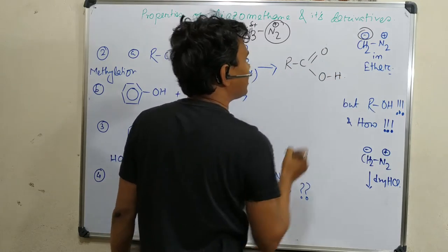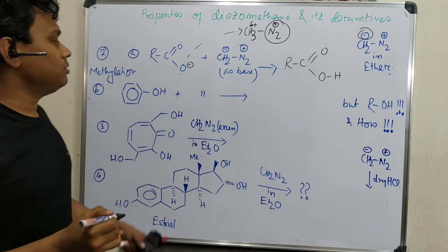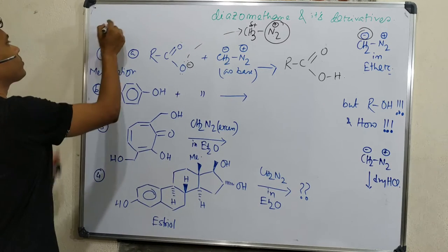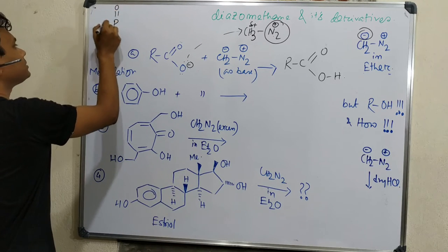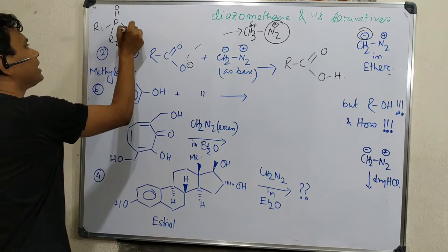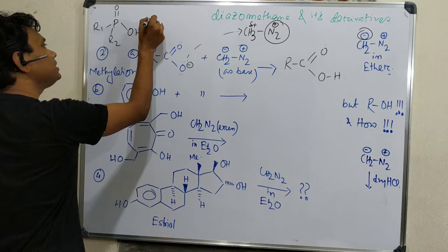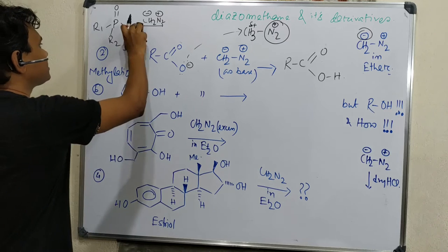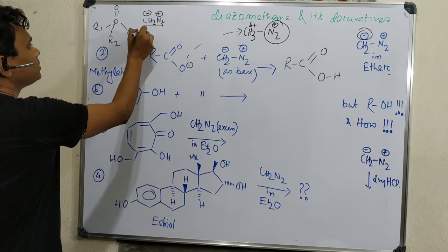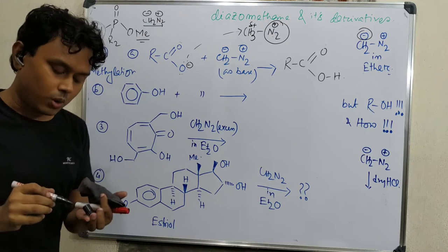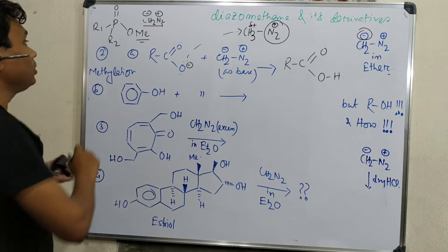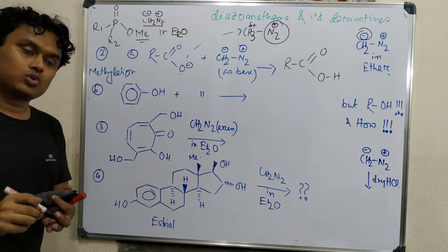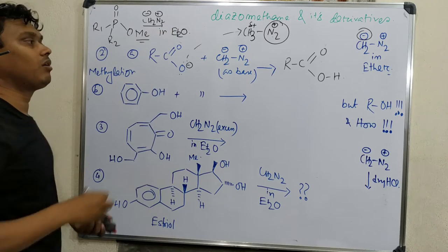Not only carboxylic acid, we can think about phosphonic acids also. If we take R1 and R2 with OH, if diazomethane is provided, then this OH is methylated to produce this methyl ester. Keep in mind it always produces methyl ester. All the reactions of diazomethane are done in ether because diazomethane is highly soluble in ether.